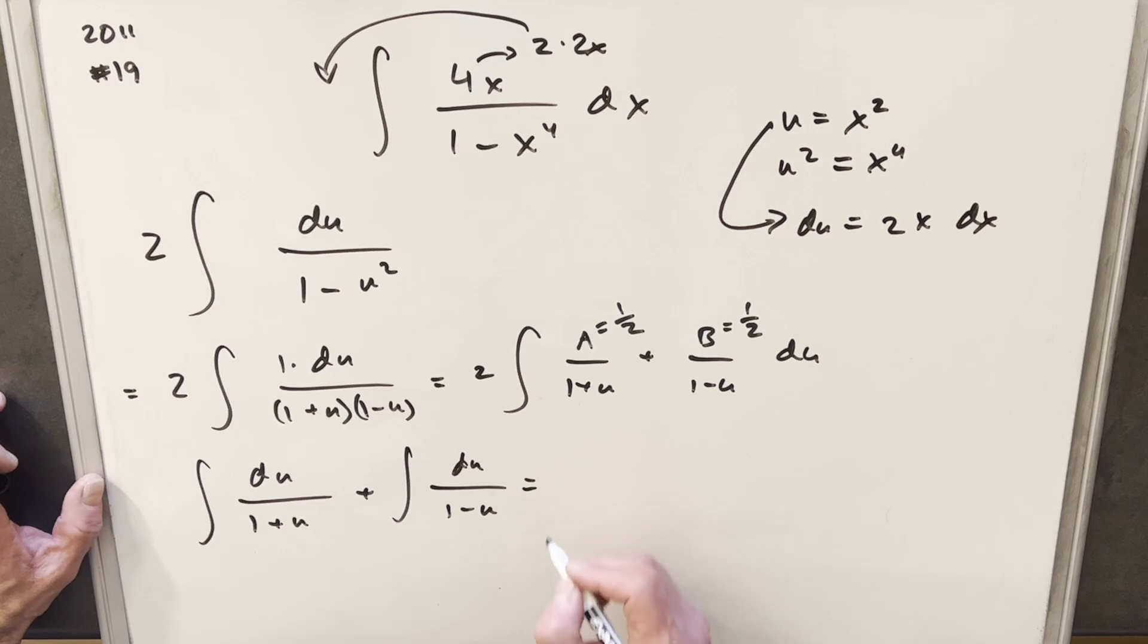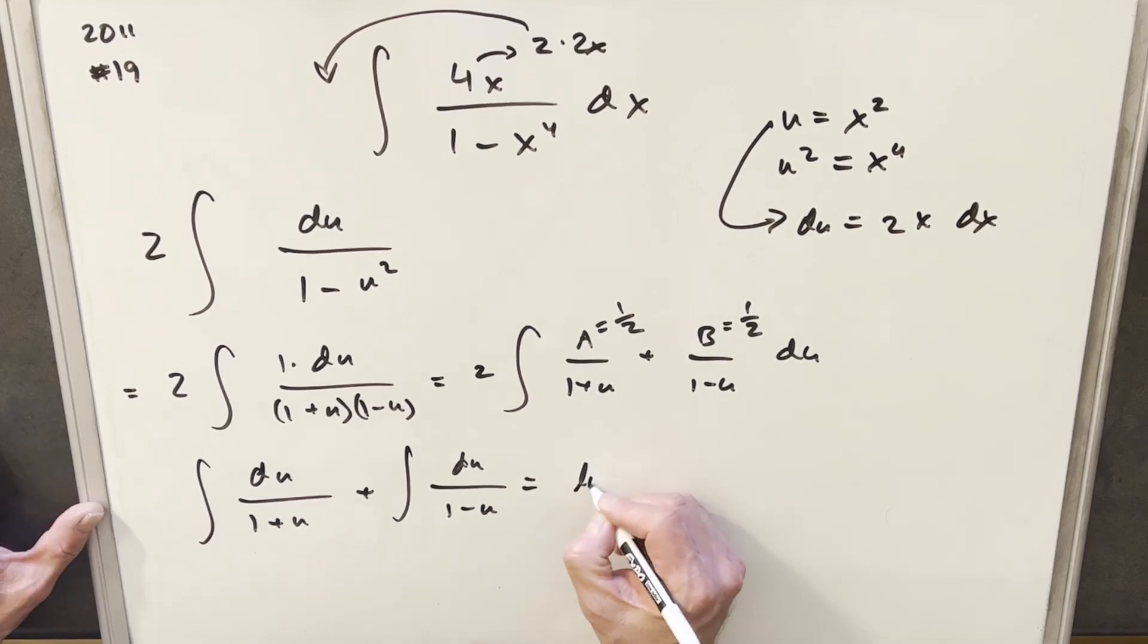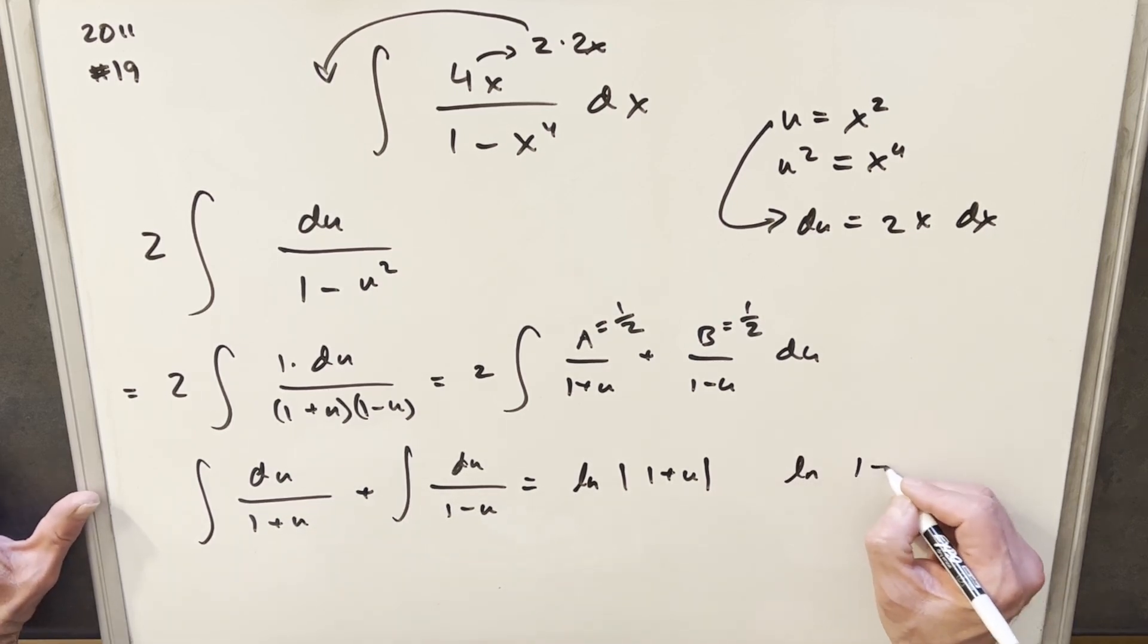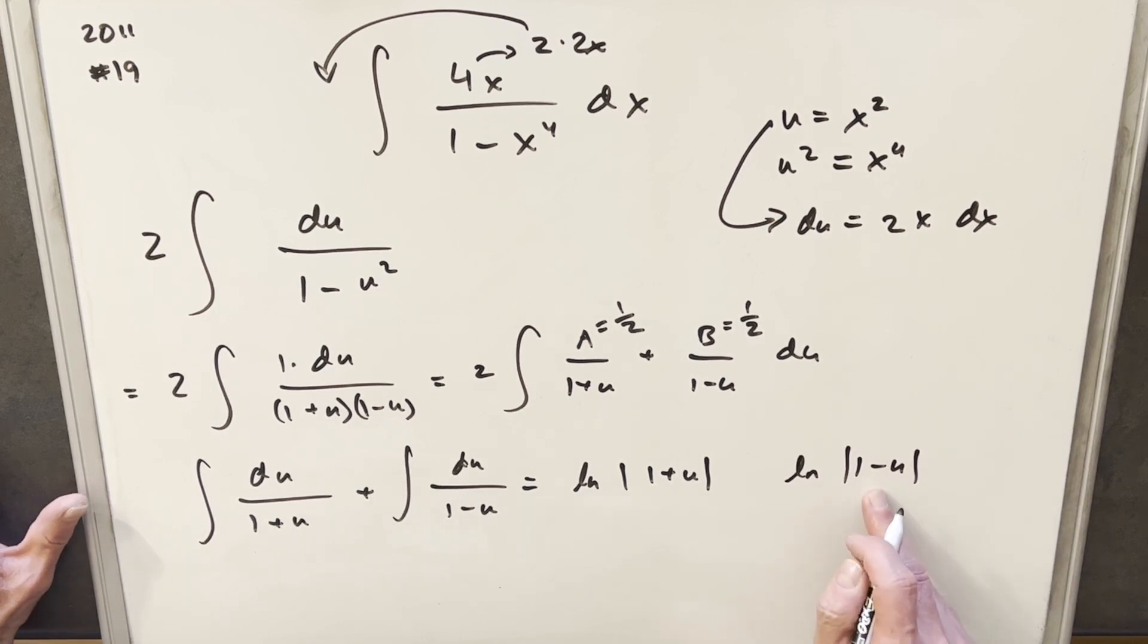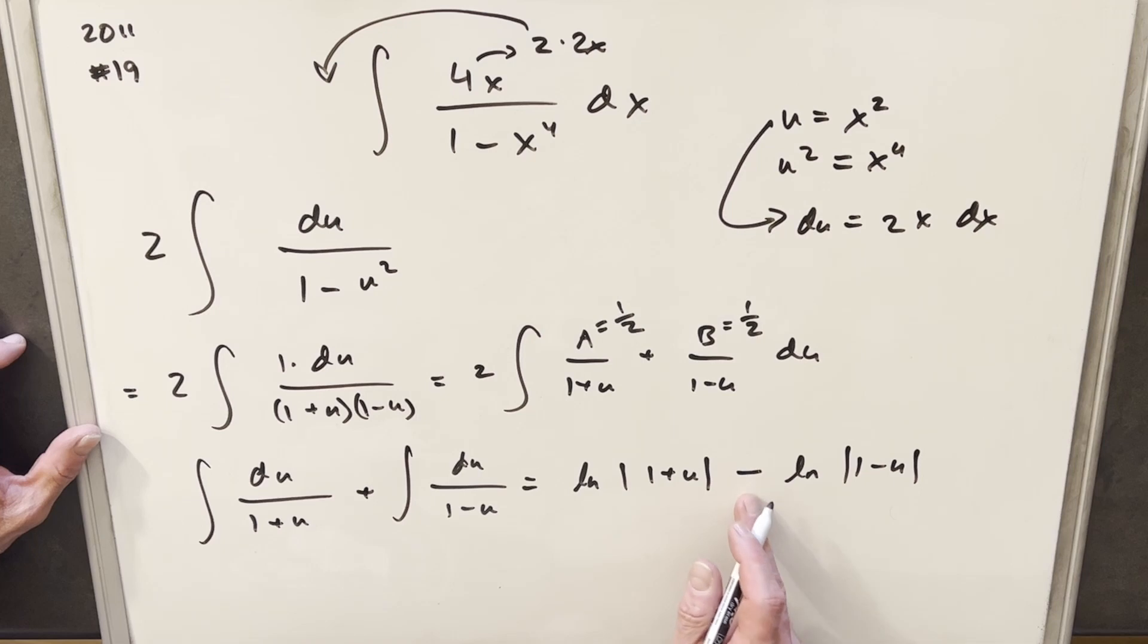And now we can integrate. So we're going to have natural log absolute value 1 plus u. Then for this next one, you have to remember this minus sign. So we're going to have natural log absolute value 1 minus u. But because of the minus, we're going to need to bring a minus here. And then by the property of logarithms, we'll turn this minus into a division. So we're going to write this as natural log 1 plus u over 1 minus u.